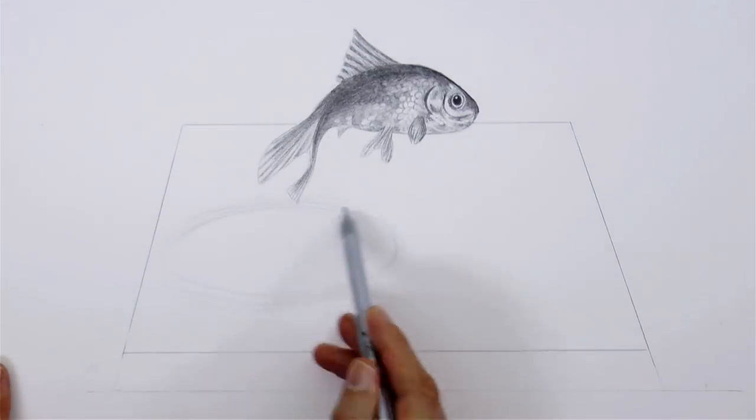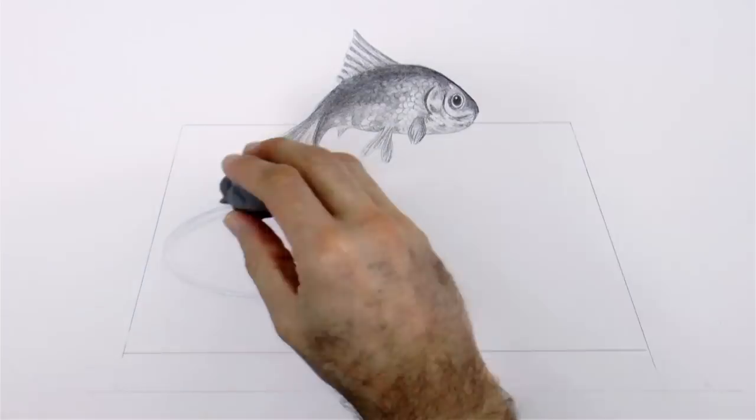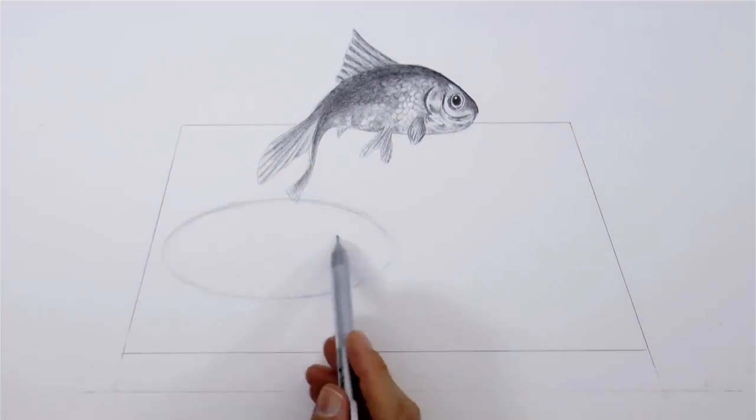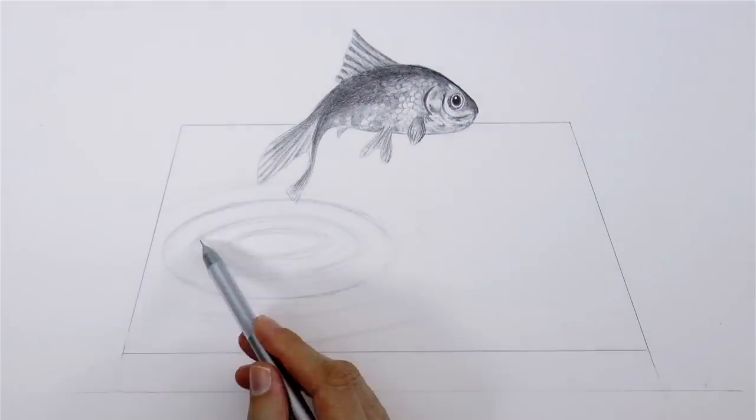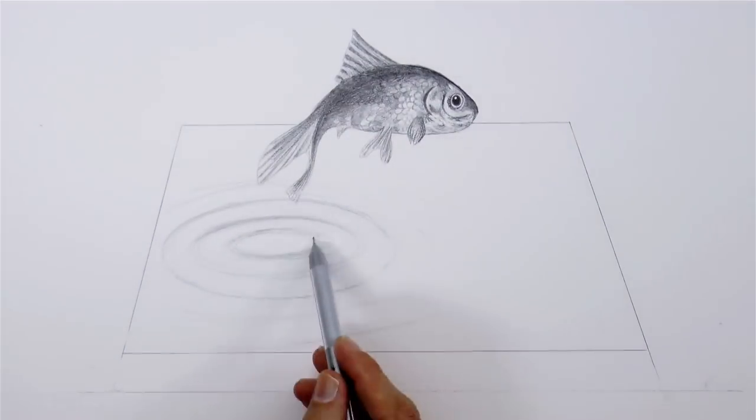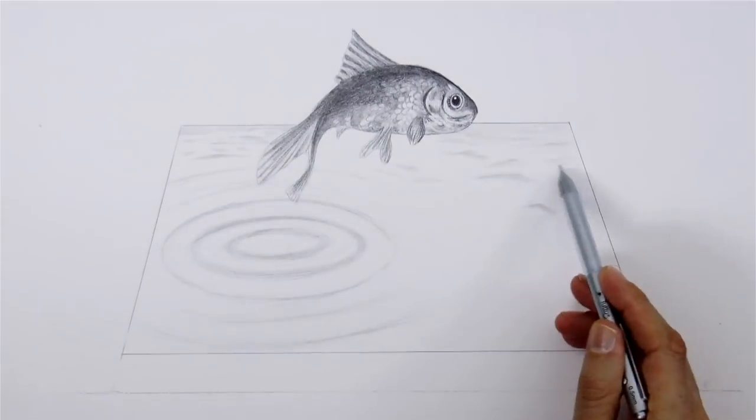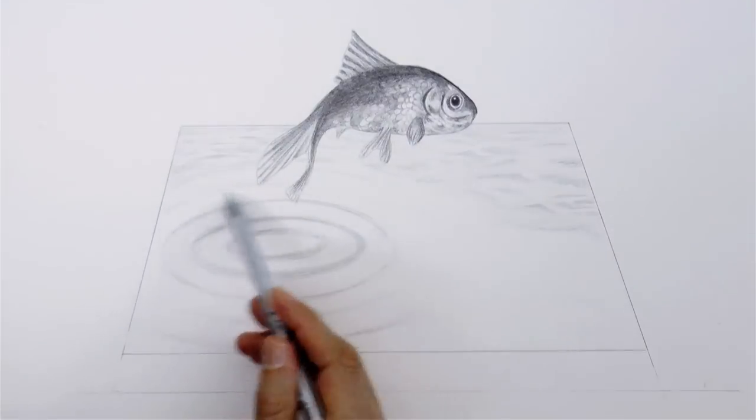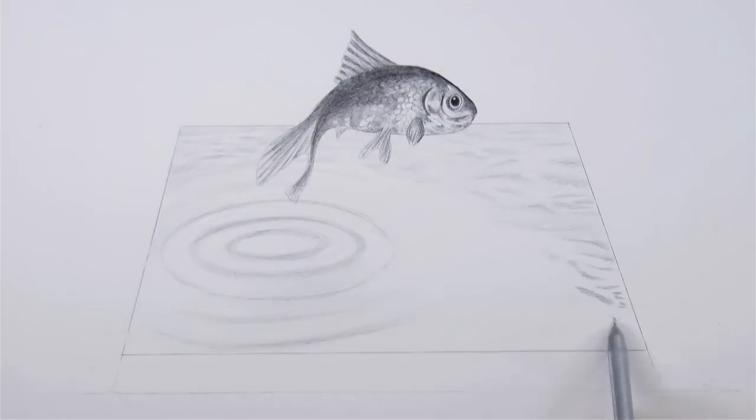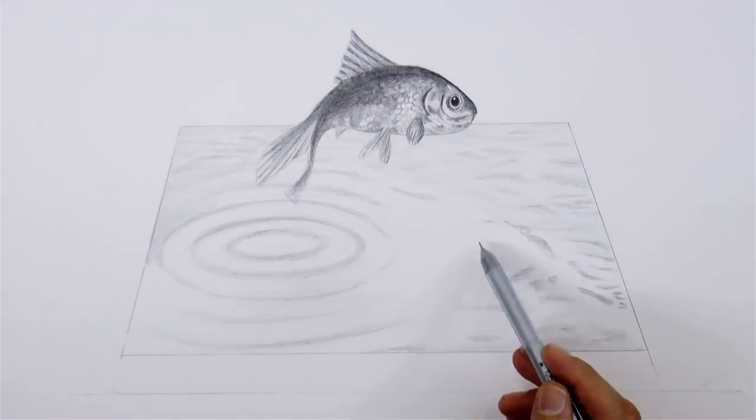Okay, good! So we drew the fish and now inside of the surface that we outlined in perspective, let's draw the water. Some ripples here, and I will draw some waves on this other side. Some little waves, like so. Good! I like it how it is looking already.